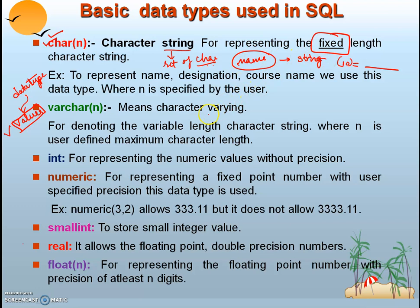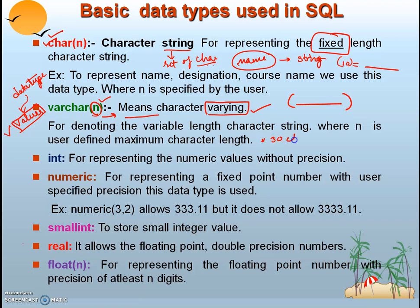The next type is VARCHAR(n). 'VAR' means varying — it does not enforce a fixed length but allows a variable-length string of any value. The 'n' in the bracket here specifies the maximum length of characters allowed. For example, while filling in an application form, you might see a pop-up saying 'maximum 30 characters allowed' — that is VARCHAR(30) in action.